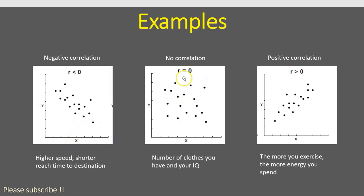The second graph shows no correlation, where r equals zero. For example, there might be no relationship between your IQ level and the number of clothes you have — those two variables are completely unrelated. The third graph shows positive correlation: as variable X increases, variable Y also increases in a linear manner. For example, the more time you spend exercising, the more energy you spend. Those two variables are positively related.